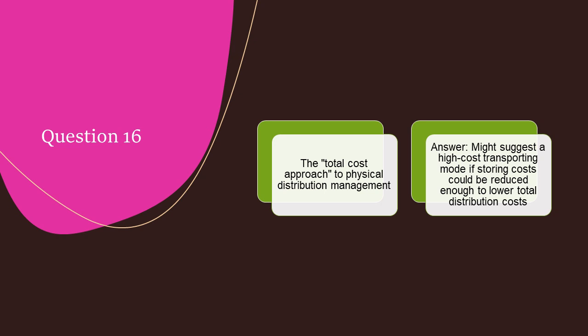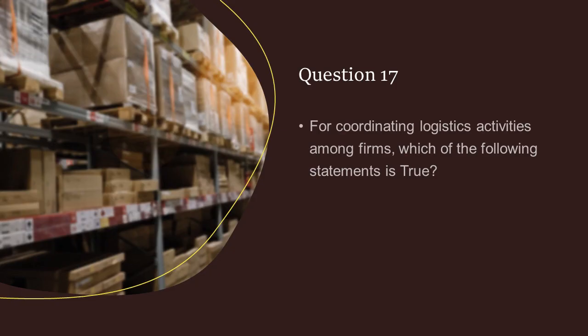The total cost approach to physical distribution management might suggest a high cost transporting mode if storing costs could be reduced enough to lower total distribution costs. For coordinating logistics activities among firms, which of the following statements is true?